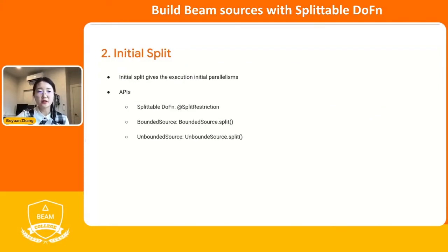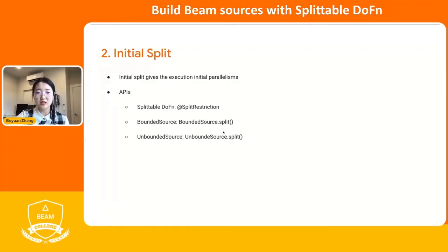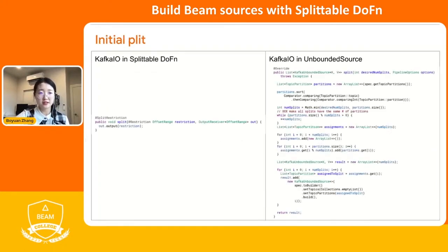Then we go to the initial split. Initial split is the first parallelism we can give to read from the source. It happens before the read actually happens. It's especially important in streaming because we don't have dynamic split for streaming, so the initial split will give all of the parallelisms from the very beginning for the streaming pipeline. If you want to provide such abilities in unbounded source and bounded source, you implement the split APIs. In Splittable DoFn, it's called split restriction.